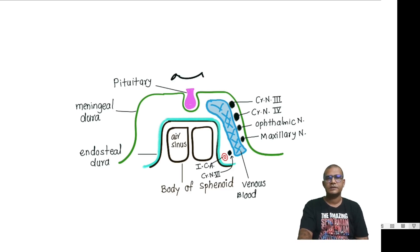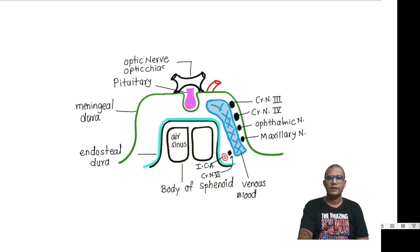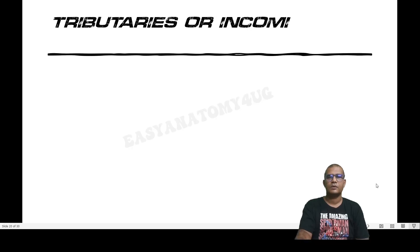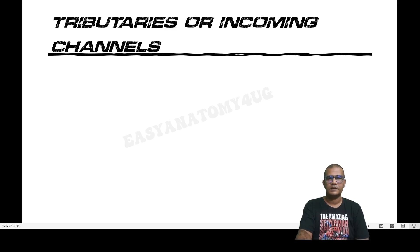The structures related to the roof of the cavernous sinus are the optic nerve and optic chiasma, and the internal carotid artery, which travels through the cavernous sinus.